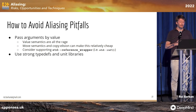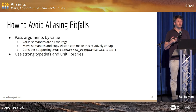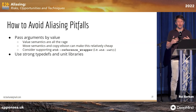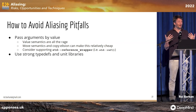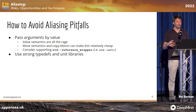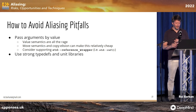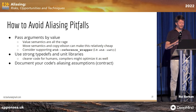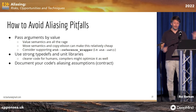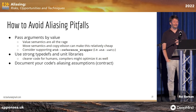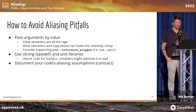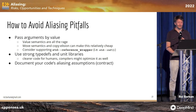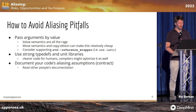Second tip: use strong typedef libraries and units libraries. These libraries tell users and the compiler that different objects have different types, causing much less confusion both to programmers and compilers. And next, like the STL does, try to document your code and its aliasing assumptions. Try to understand what your contract is, and read other people's documentation.